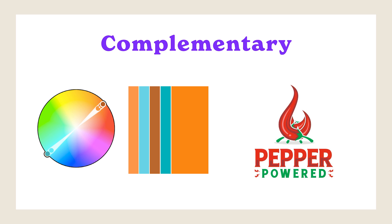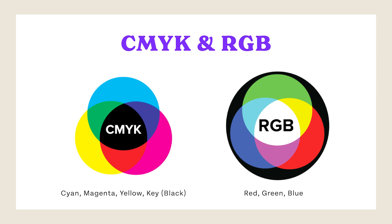A complementary color scheme relies on using two colors that are directly opposite each other on the color wheel, along with relevant tints or shades. Complementary color schemes offer the highest level of color contrast, creating visually striking and dynamic designs. However, it's important to use complementary colors thoughtfully — typically it's best to choose one color as dominant and use the second as accents or highlights. Complementary schemes are particularly effective for charts and graphs. For example, the Pepper Power logo uses the opposite colors red and green.